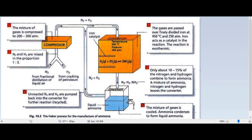In summary, let's look at this diagram. Nitrogen and hydrogen in the ratio 1 to 3 are passed through a compressor and then into the converter, where iron is used as a catalyst at 450 degrees Celsius. The ammonia gas produced is then taken to a condenser where it condenses into liquid ammonia.